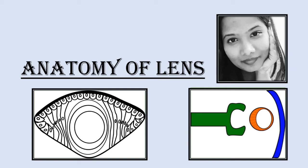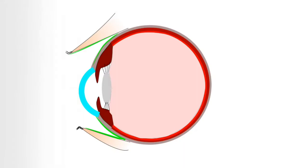Welcome to IQR Central. Today's lecture is on the anatomy of the human lens. We're going to start right away. The lens is located in the anterior segment of the eye. The lens is also known as the crystalline lens.